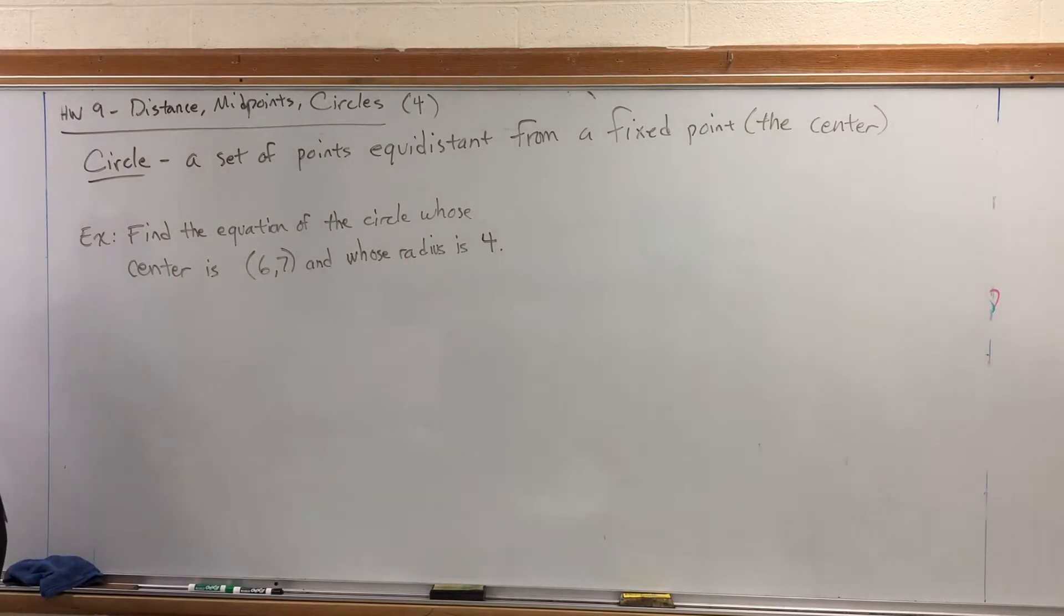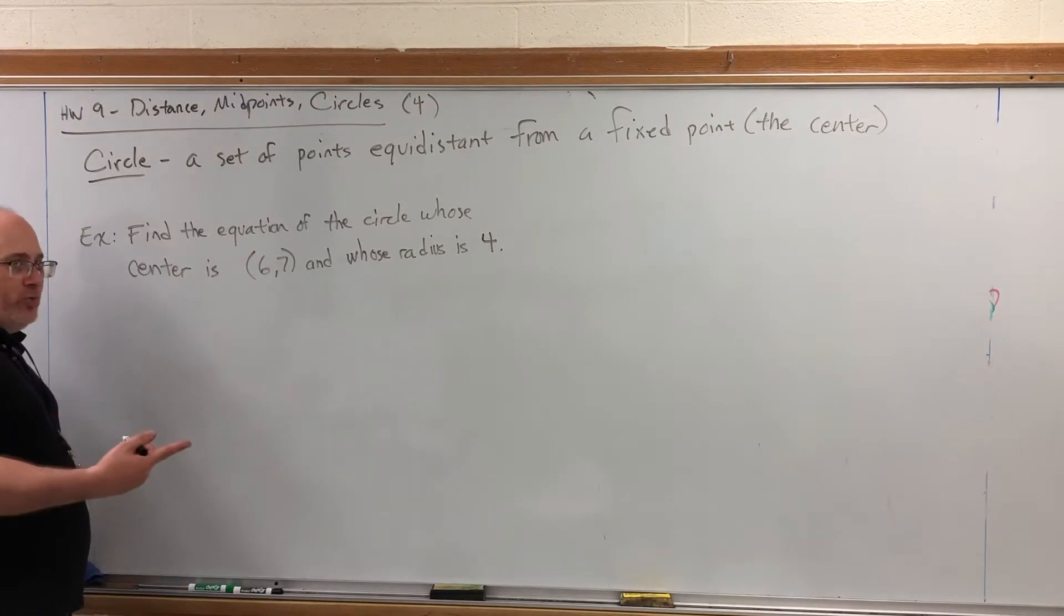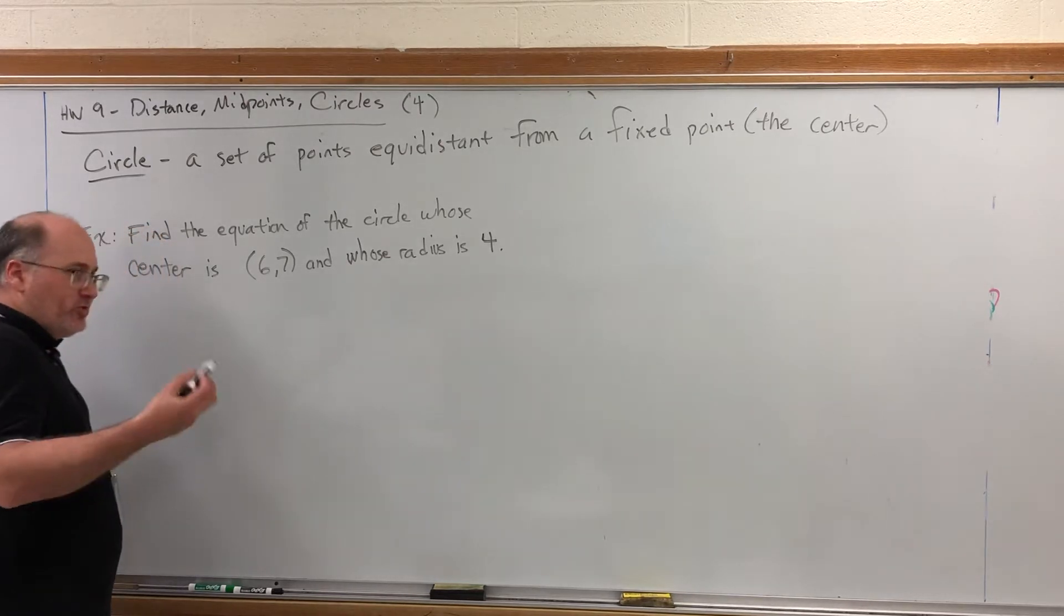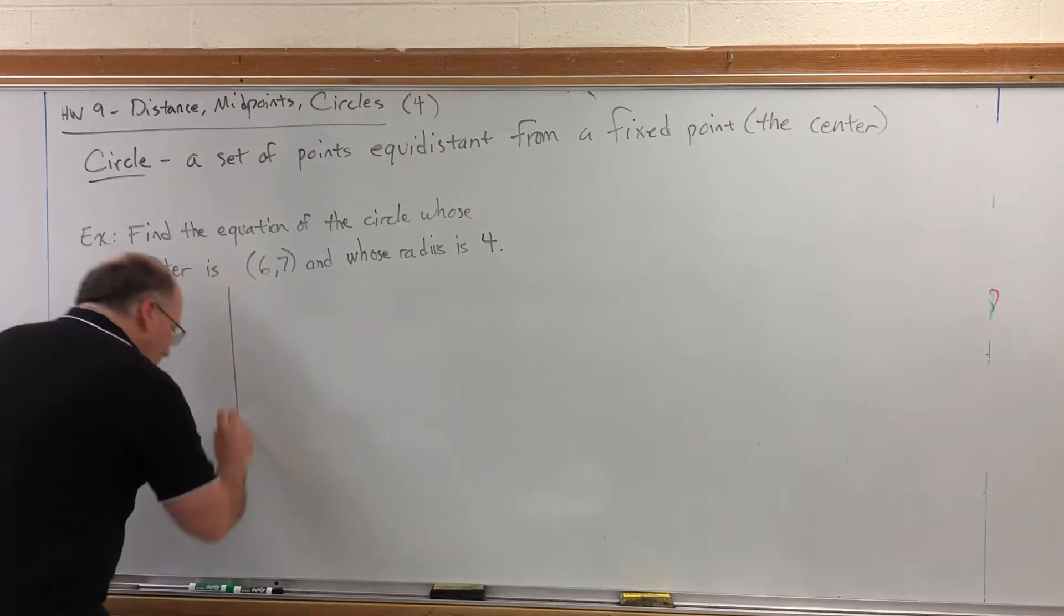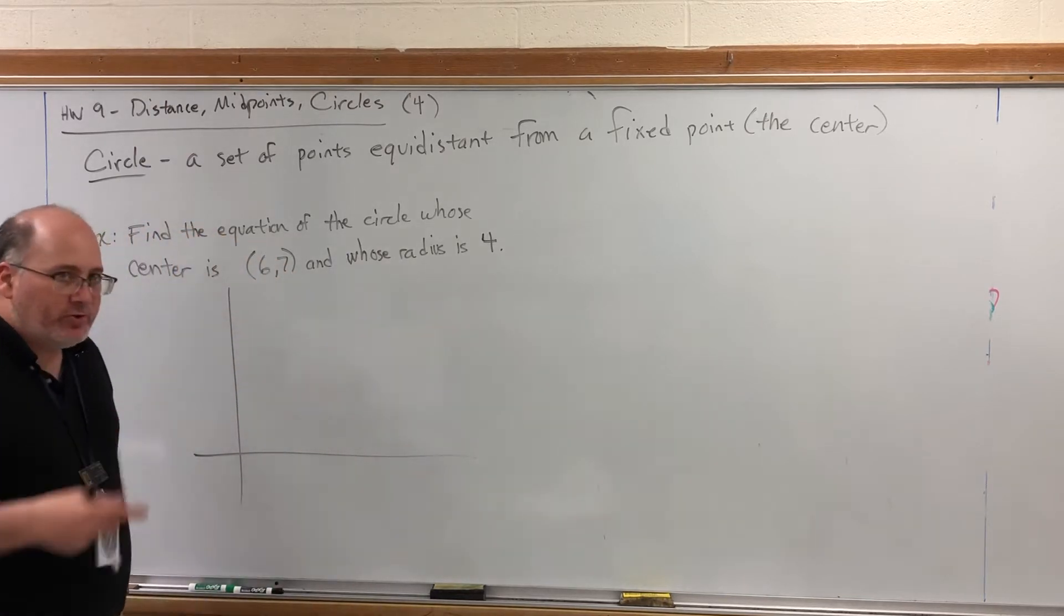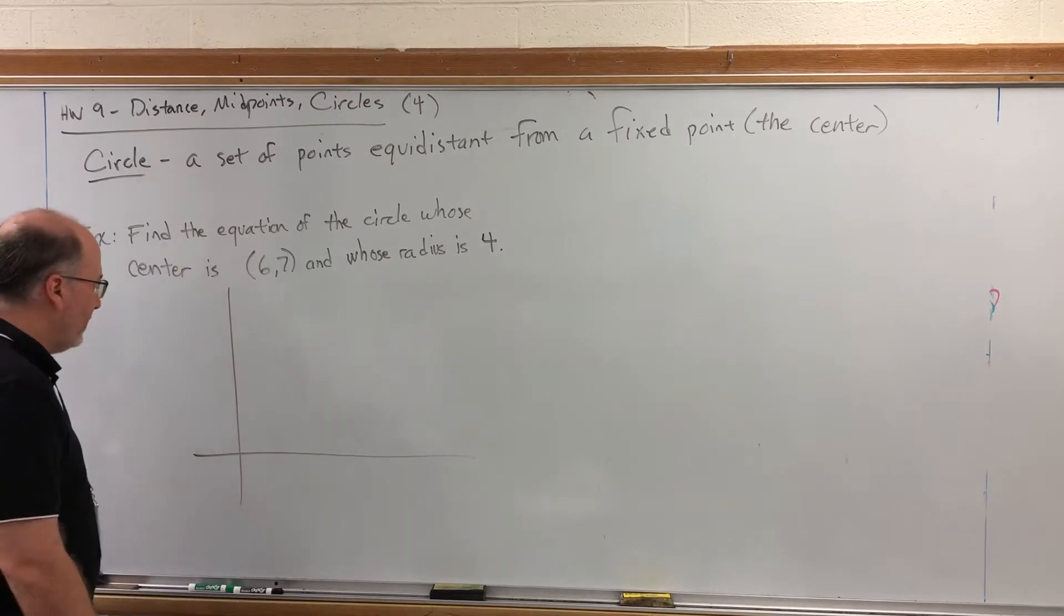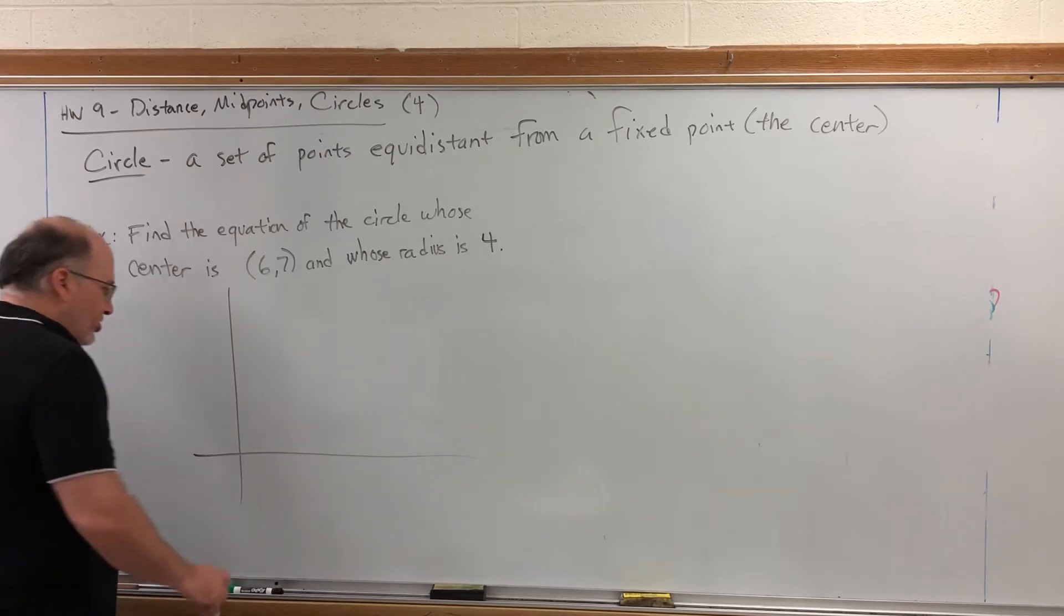We're actually going to start by graphing this one en route to finding its equation. Find the equation of the circle whose center is (6,7) and whose radius is 4. I want to start by showing you the best way to draw the circle. Now, we all know what a circle looks like, but in the homework, you will be asked to click on things to draw a circle. So, I want to show you how to find the information that you need to draw the circle. The first thing you need to do is locate the center.